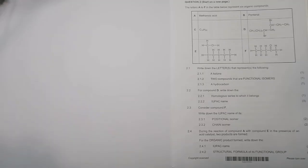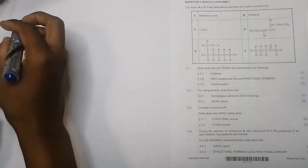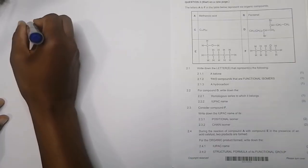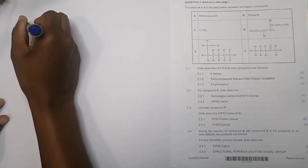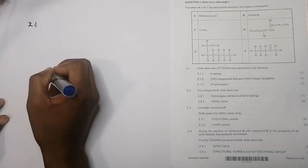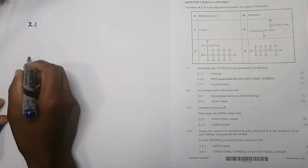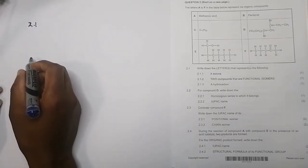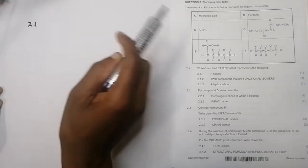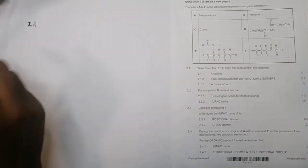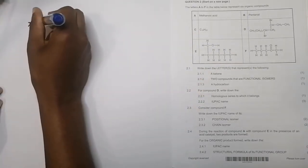They say write down the letters that represent the following. Please note when they say write down the letters, that's what they expect of you. So for question 2.1.1, which one is a ketone? Definitely that would be F.